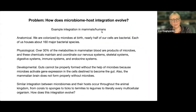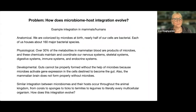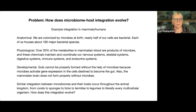The main problem to explain with holobiont evolutionary theory is the issue of microbiome-host integration. Scott Gilbert has summarized a lot of this. In mammals and humans, there's all this anatomical integration — we're colonized at birth, half of our cells are bacterial, each of us houses 160 species. Physiologically, 30% of the metabolites in mammalian blood are products of microbes. Developmentally, the gut can't even be formed without the help of microbes, and microbes activate gene expression in cells designed to become the gut.